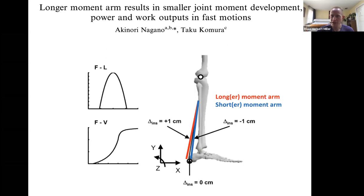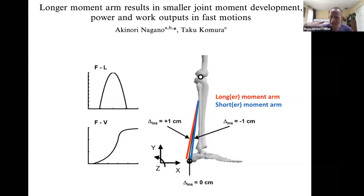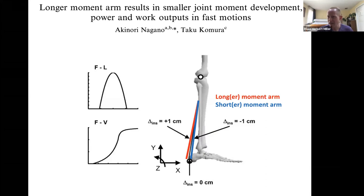A recent study even put it in the title: longer moment arm for the Achilles tendon results in smaller joint moment development and smaller work and power outputs in fast motions. If you're doing a fast, powerful plantar flexion contraction — like the push-off phase of running or sprinting — the longer your moment arm, the less torque you produce at the joint, and the less power and work you get from your muscles.